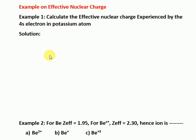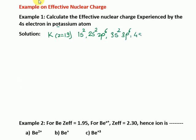Let us start the first example: calculate the effective nuclear charge experienced by the outermost electron. The first step in Slater's rule is to write the electronic configuration for the atom. Potassium has Z = 19 and its electronic configuration is 1s² 2s² 2p⁶ 3s² 3p⁶ 4s¹. This gives us the n shell (4s), the n−1 shell (3s3p), and the n−2 shell (2s2p).